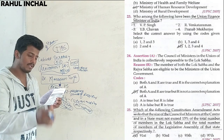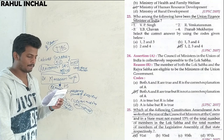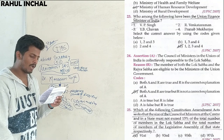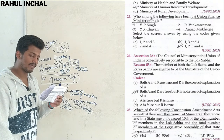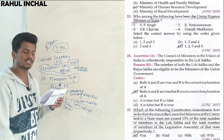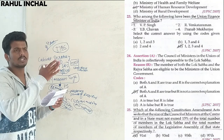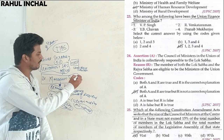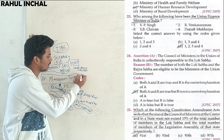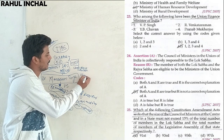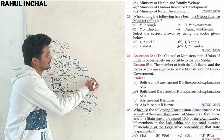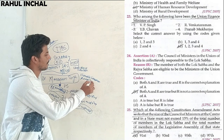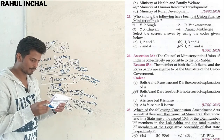Who among the following have been Union Finance Ministers of India? V.P. Singh served from 1984 to 1987. Y.B. Chavan served from 1970 to 1974. R. Venkataraman served from 1980 to 1982. Pranab Mukherjee served two tenures: 1982 to 1984 and 2009 to 2012. The current Finance Minister is Nirmala Sitharaman, and before her it was Arun Jaitley.